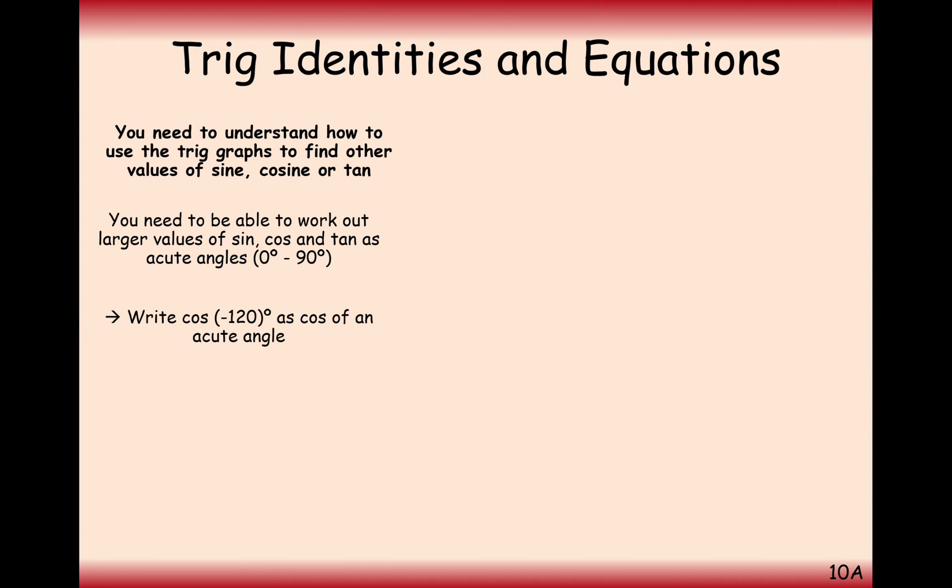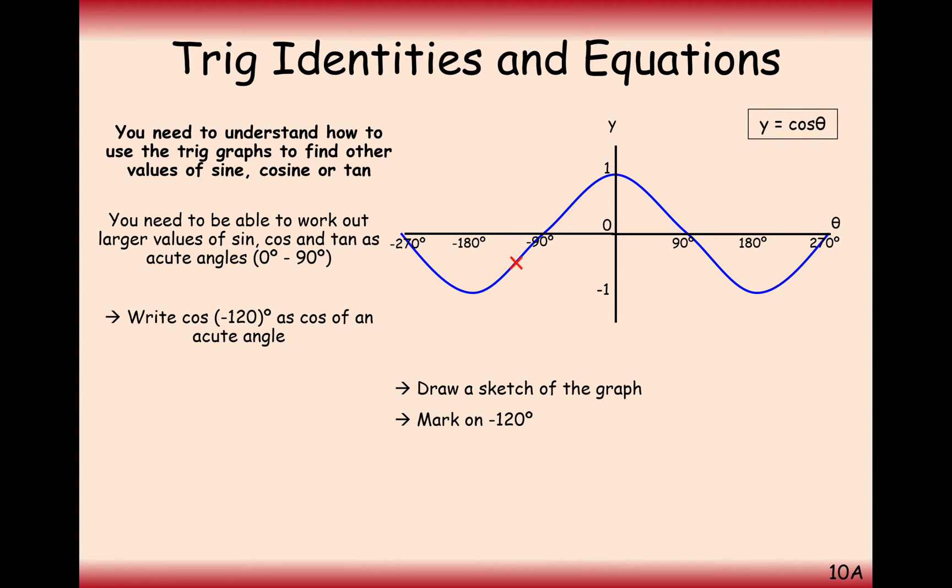Let's have a go at another one then. Let's write cos of minus 120 as cos of an acute angle. The graph for cos of minus 120 is going to look like this. The minus 120 marker is going to be here.